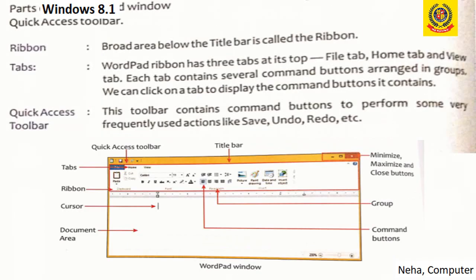Now let's explain these parts. The ribbon is a broad area below the title bar and it has different functions and formatting features for the document. The WordPad ribbon has three tabs at its top: File, Home, and View. Each tab has several command buttons arranged in groups. When we click on a tab, all the command buttons are displayed and we can click on them to perform that function. The Quick Access Toolbar has Save, Undo, and Redo options which we use quite frequently.